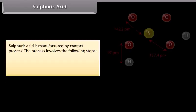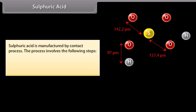Sulfuric acid. It is the most important oxyacid of sulphur. It occurs in certain minerals and springs. It has large application in industries and is also known as the king of chemicals. Sulfuric acid is manufactured by contact process. The process involves the following steps: